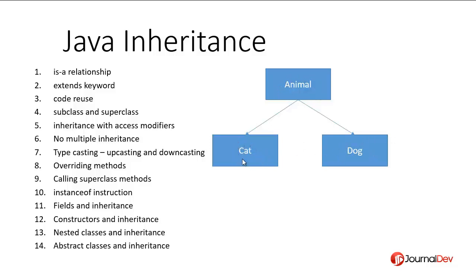So obviously we can reduce the number of lines of code. In this scenario, animal becomes the superclass which has two subclasses: cat and dog. We can say that animal is the superclass of cat, and animal is the superclass of dog.